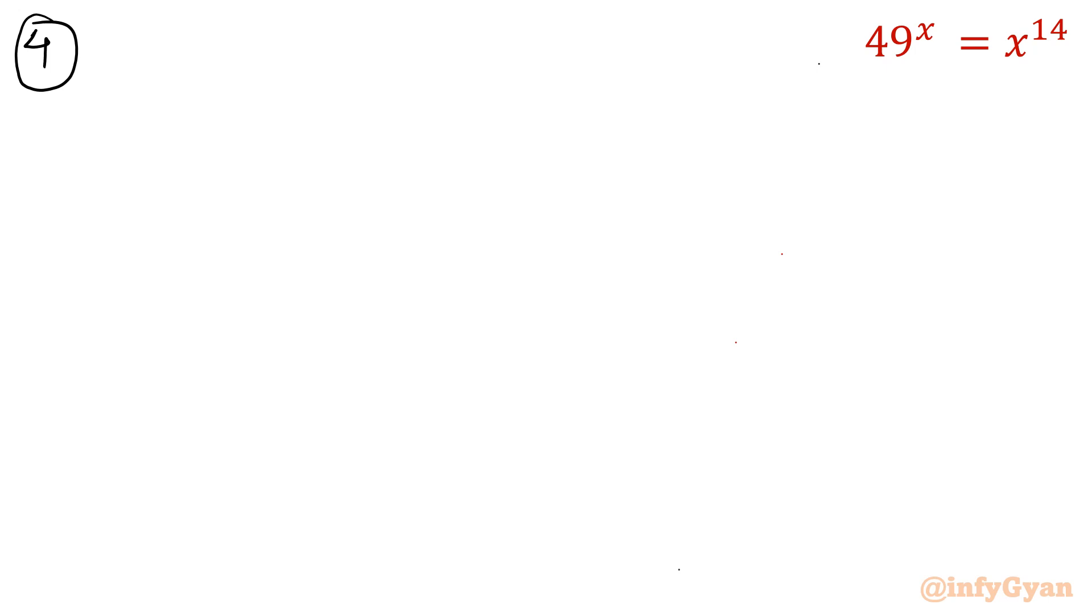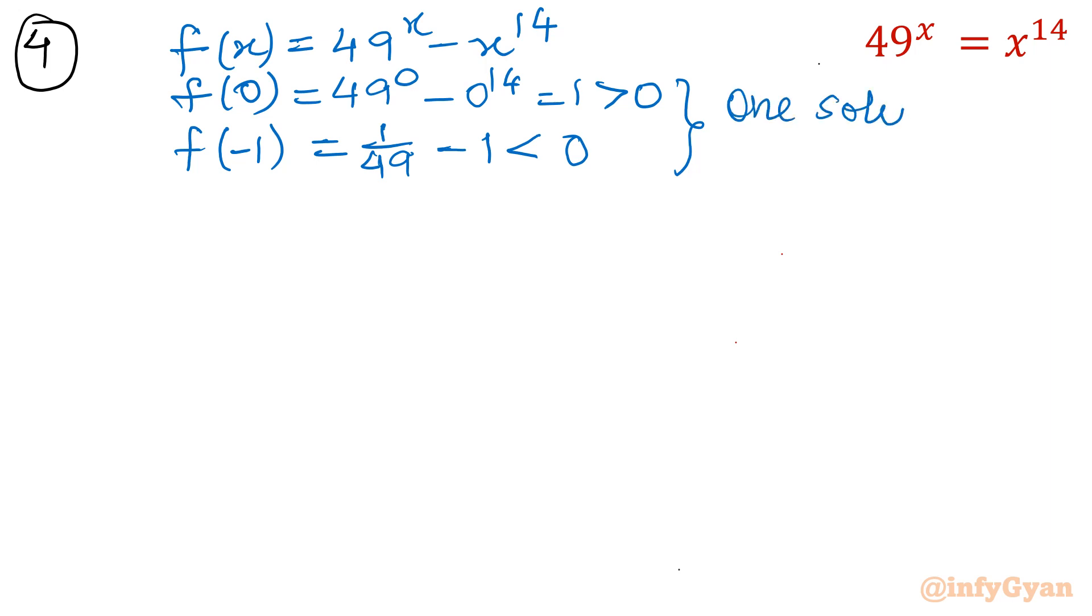Now let me consider the fourth method which will provide you the complete solution. What I am trying to do here, let me consider f(x) equal to 49^x minus x^14. Let me show you few values. f(0) is 49^0 minus 0^14, value is 1, positive. Now let me write f(-1). Negative 1, I will write 1/49 and power is -1, minus 1 so I will write 1 because power is even. Check this value is negative. One important noticeable point: one solution is there in between 0 and -1. This is confirmed.